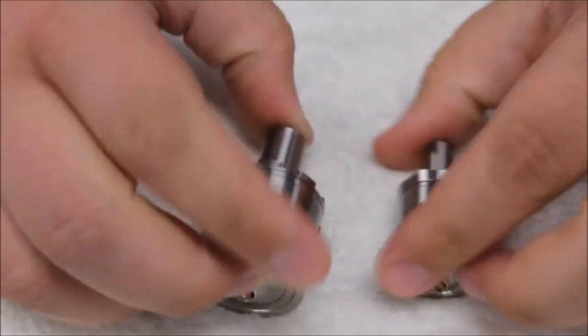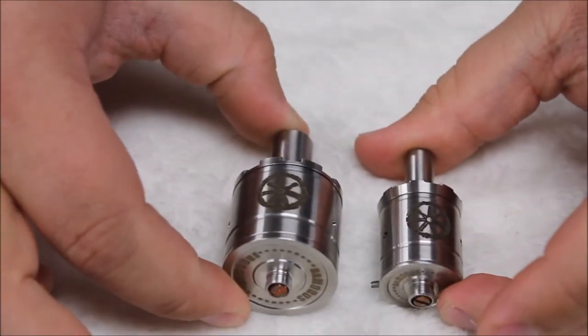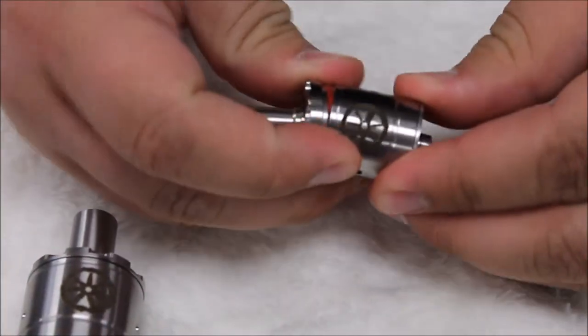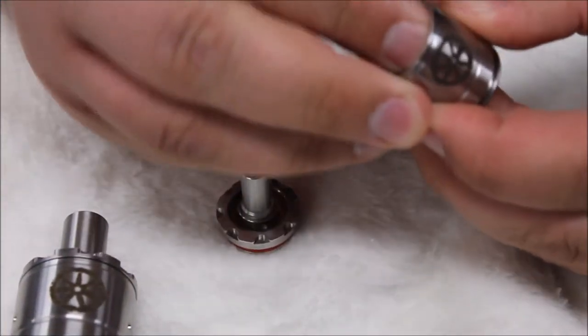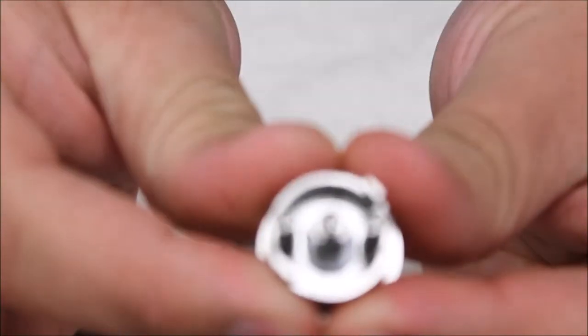Both of them have the screw on the side to keep it in place. Both come with a drip tip. This is the internals.